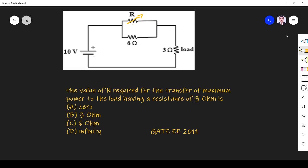Hi friends, in this video let us solve a question asked in GATE 2011 electrical engineering paper. The question is: what is the value of resistance R required for the transfer of maximum power to a load having a resistance of 3 ohms? They ask what is the value of R for maximum power transfer to the load.